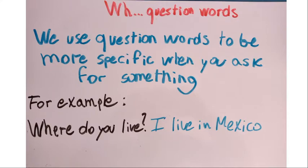Today we are going to check what are W question words. First, we use question words to be more specific when we ask for something. For example, the question 'Where do you live?' — I live in Mexico. Mexico is the place, and 'where' is the question word. We use 'where' when we want to know what place is doing something or involved in something.